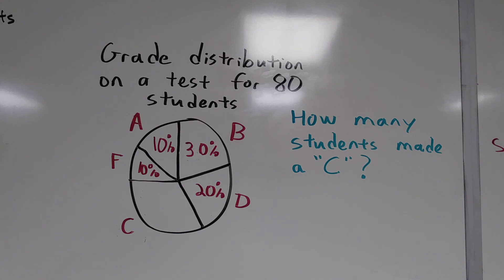Here's an example. A test was given and here is the grade distribution on that test. 80 students in total took the test. 10% made an F, 10% made an A, 30% made a B, 20% made a D. What we need to find out is how many students made a C?